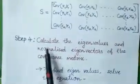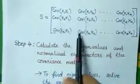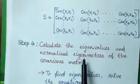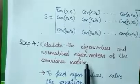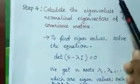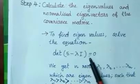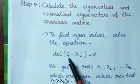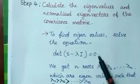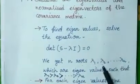Step 4: Calculate the eigenvalues and normalized eigenvectors of the covariance matrix. First find the eigenvalues, then the eigenvectors, then normalize them. To find the eigenvalues, solve the equation: determinant of (S minus lambda I) equals 0, where S is the covariance matrix, lambda is the root of this equation, and I is the identity matrix. Solving gives values lambda 1, lambda 2, ..., lambda n — these are the eigenvalues.